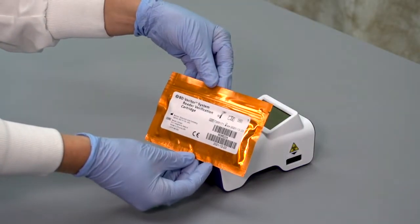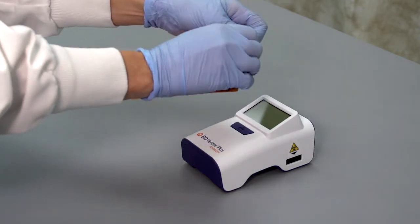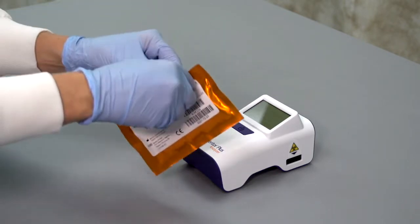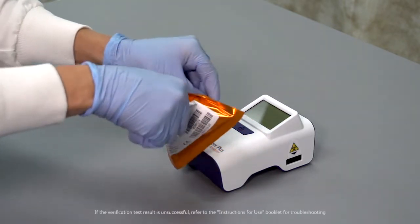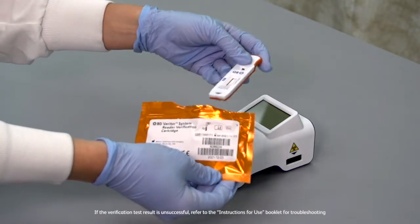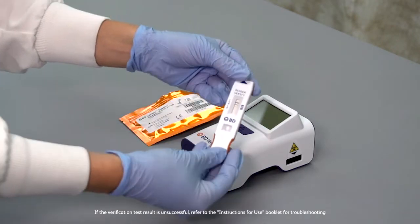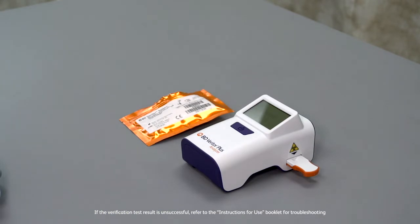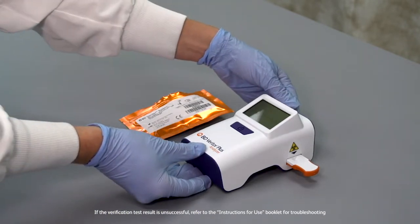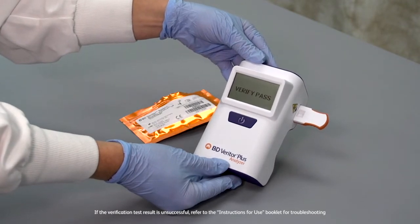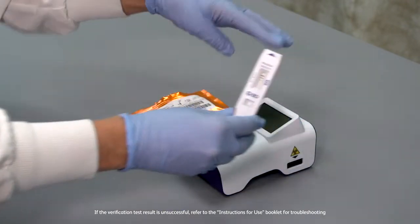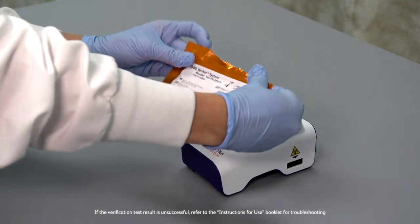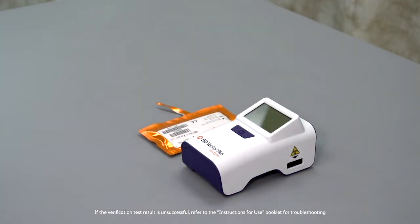For the first-time use of a BD Veritor Plus Analyzer and before testing patient specimens, a system verification check should be performed with the supplied and reusable verification cartridge. Using the Analyze Now test mode, simply insert the orange verification cartridge into the test device slot. A distinct click indicates when the test device is fully inserted. After a quick three-second reading and analysis, Verify Pass appears on the LCD screen. Store the verification cartridge in the original Ziploc pouch for regular use. The frequency of verification testing is determined by each site's regulations or practices.